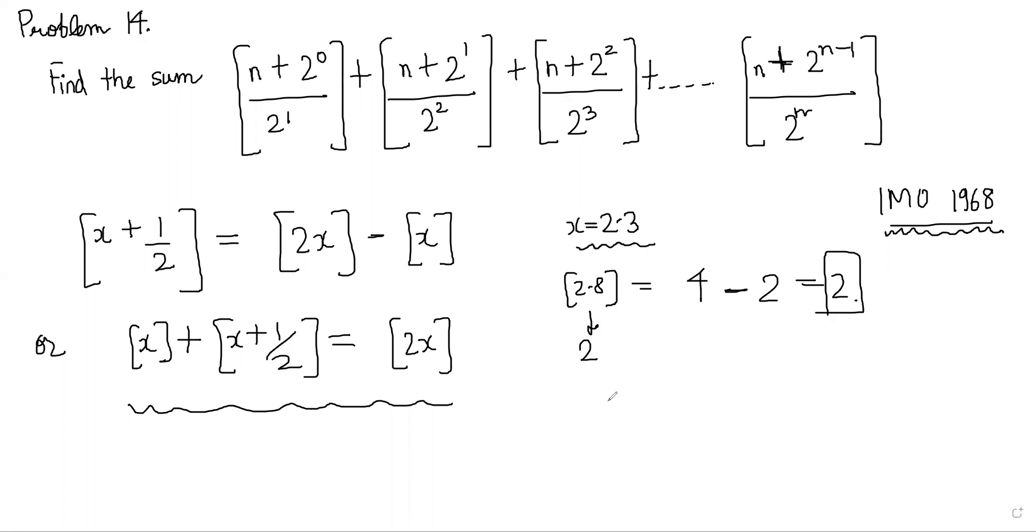We can also confirm it for negative numbers. For example, x equals minus 1.2 plus half is minus 0.7, so floor is minus 1 on the left side. On the other side, you get minus 2.4, so minus 3 minus minus 2, which also equals minus 1, showing this identity works.